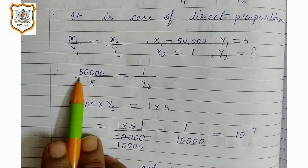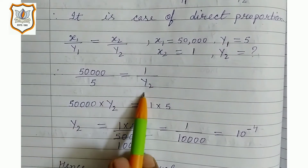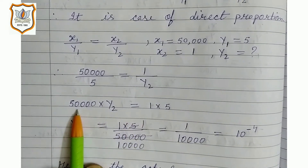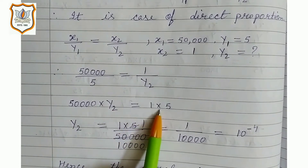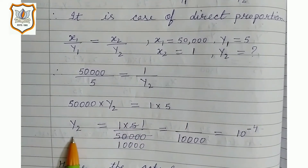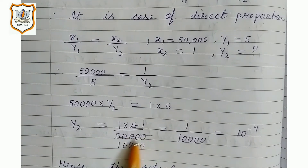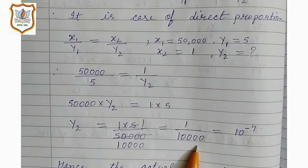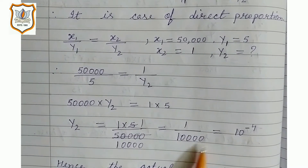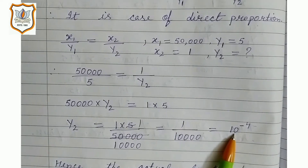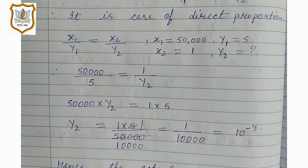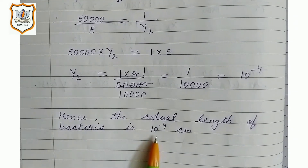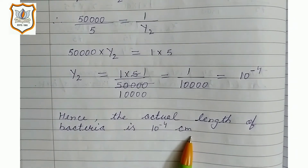Therefore 50,000 upon 5 is equal to 1 upon y2. Now we cross multiply: 50,000 × y2 is equal to 1 × 5. y2 is equal to 5 upon 50,000, which equals 1 upon 10,000. We can write 1 upon 10,000 as 10 raised to power minus 4. Hence the actual length of the bacteria is 10 raised to power minus 4 centimeters.